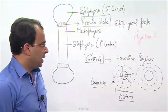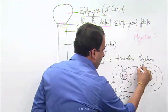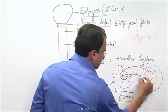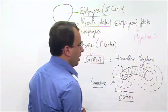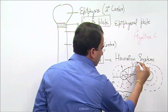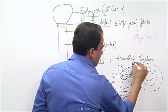These haversian systems or haversian canals are connected to each other by another set of canals called Volkmann's canal. This is called Volkmann's canal.